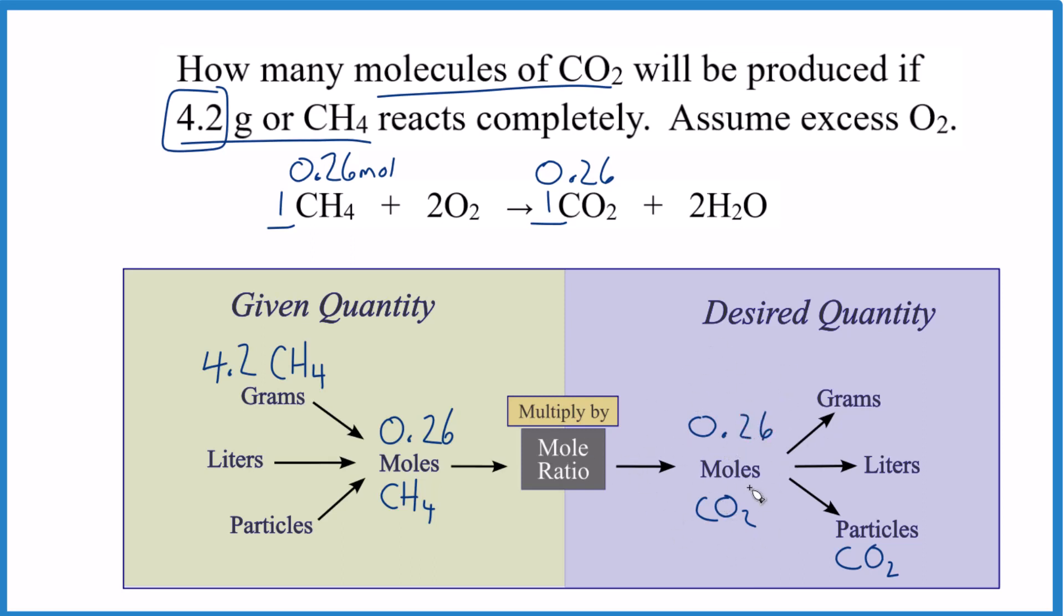Then we just take this and multiply it times Avogadro's number, and we'll get 1.6 times 10 to the 23rd particles, in this case molecules. So that's how we do it. We can use that mole ratio to figure this out.